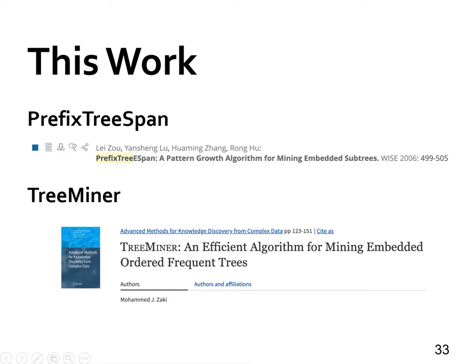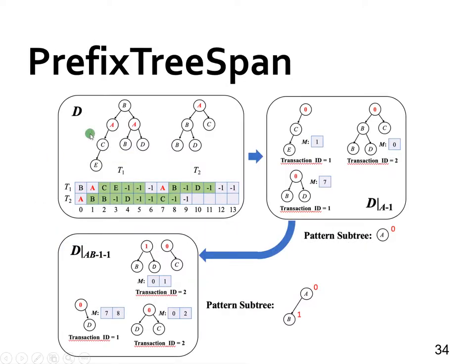In this work, we implement and compare two serial algorithms for mining embedded subtree patterns on top of our PrefixFPM framework. The two algorithms are PrefixTreeSpan and TreeMiner. PrefixTreeSpan is similar to PrefixSpan. Here, a tree is encoded as we mentioned before, where backtracking from a child is denoted by minus 1. For example, T1 in D is encoded as B, A, C, E, minus 1, minus 1, minus 1, A, B, minus 1, D, minus 1, minus 1, minus 1.